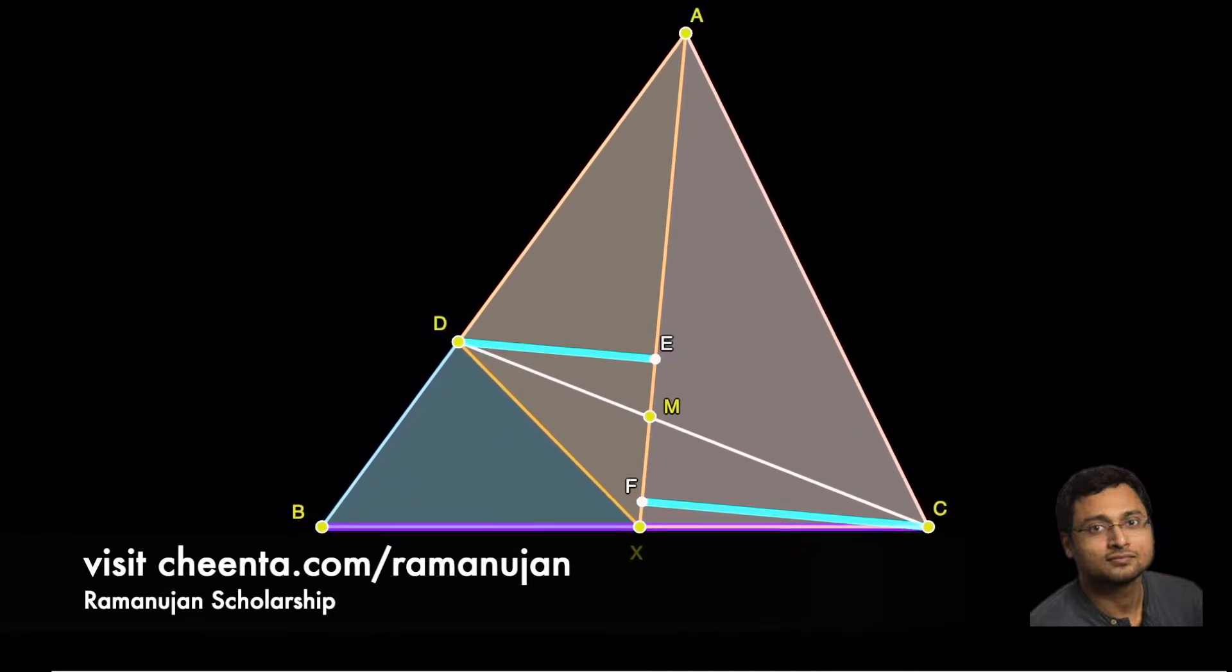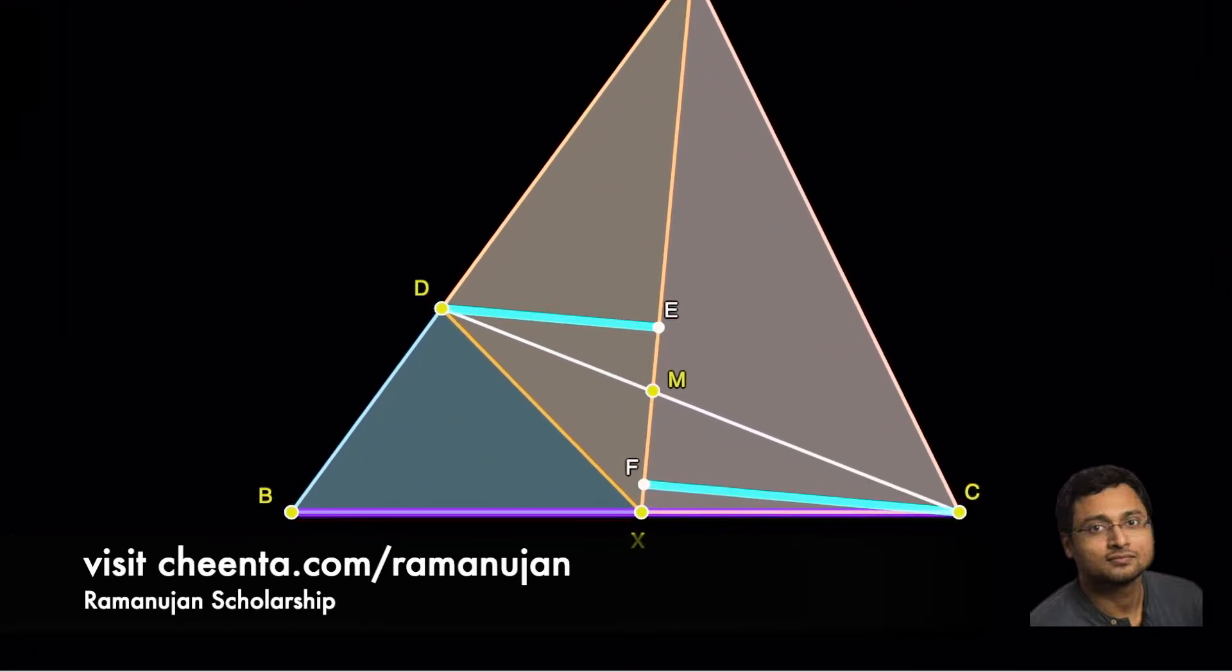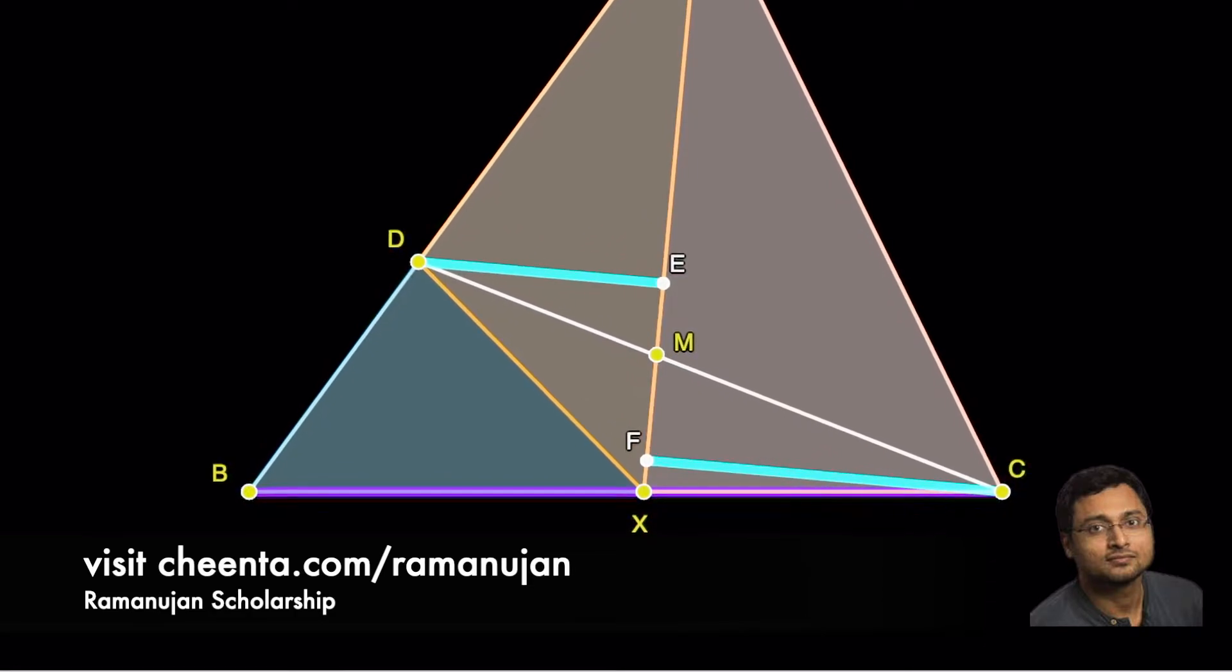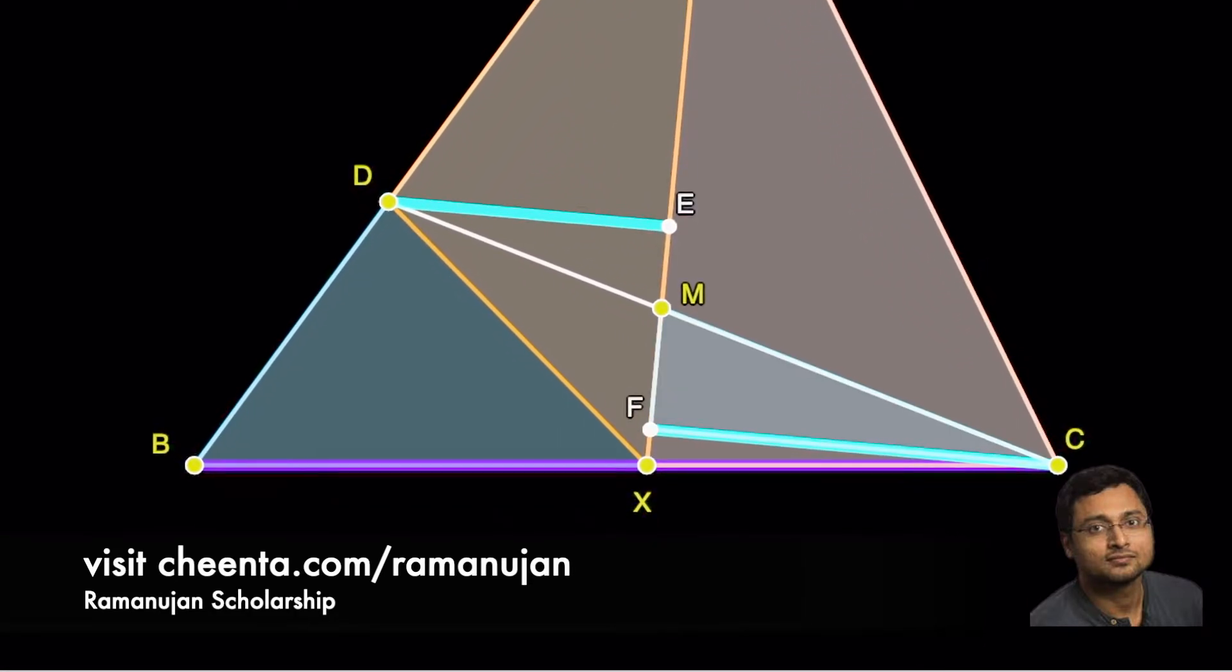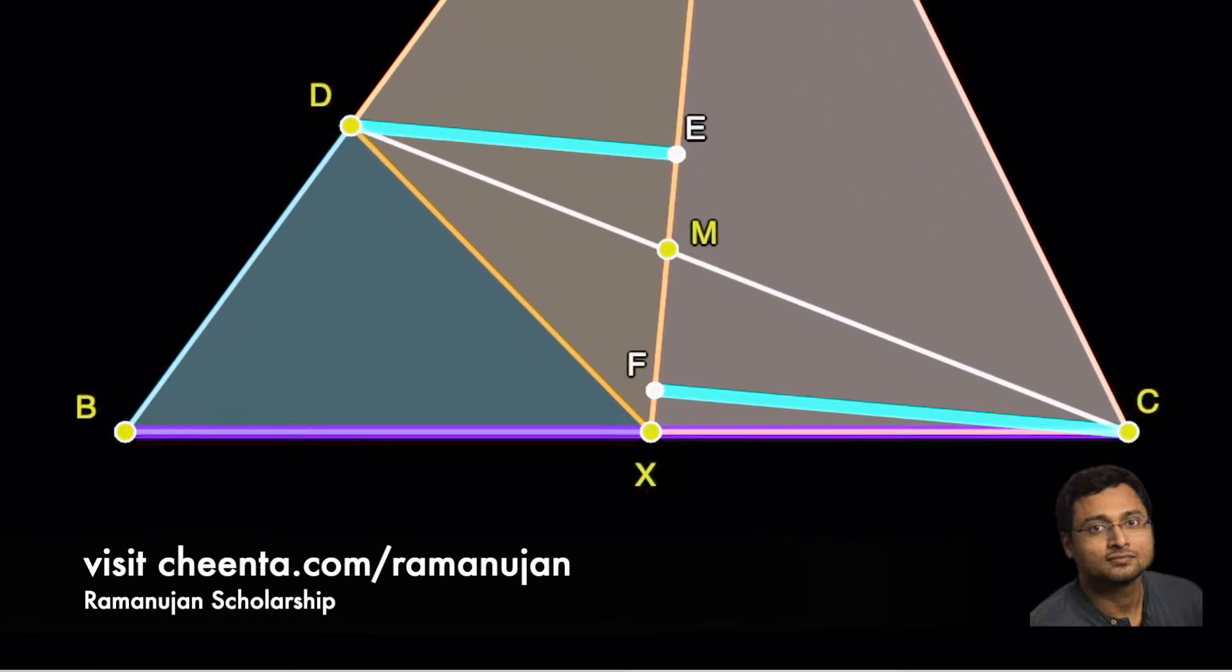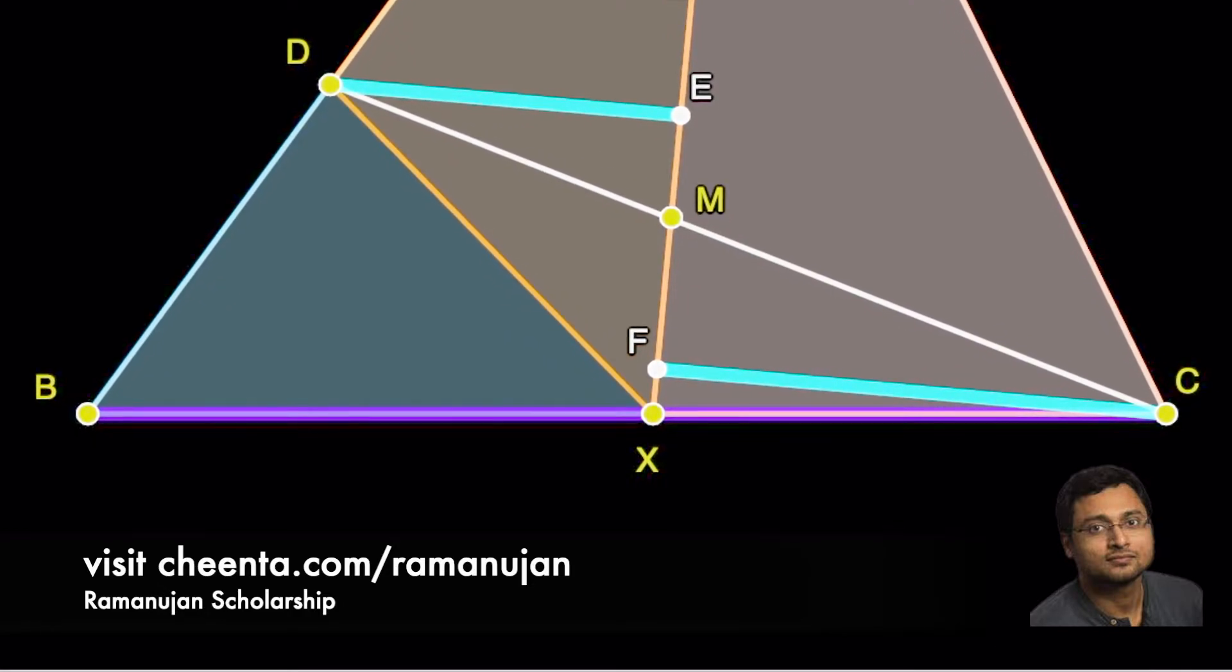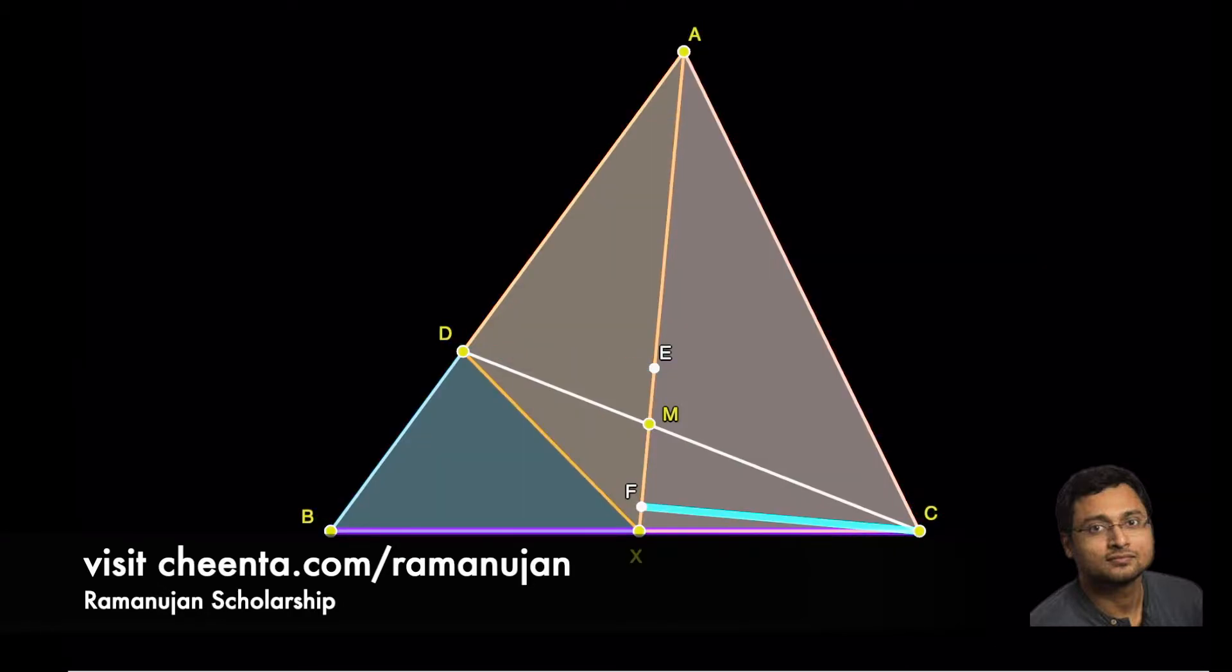We will be comparing the triangles DEM and CFM. Let's see how we can do that. Firstly, we notice that DE is equal to CF.